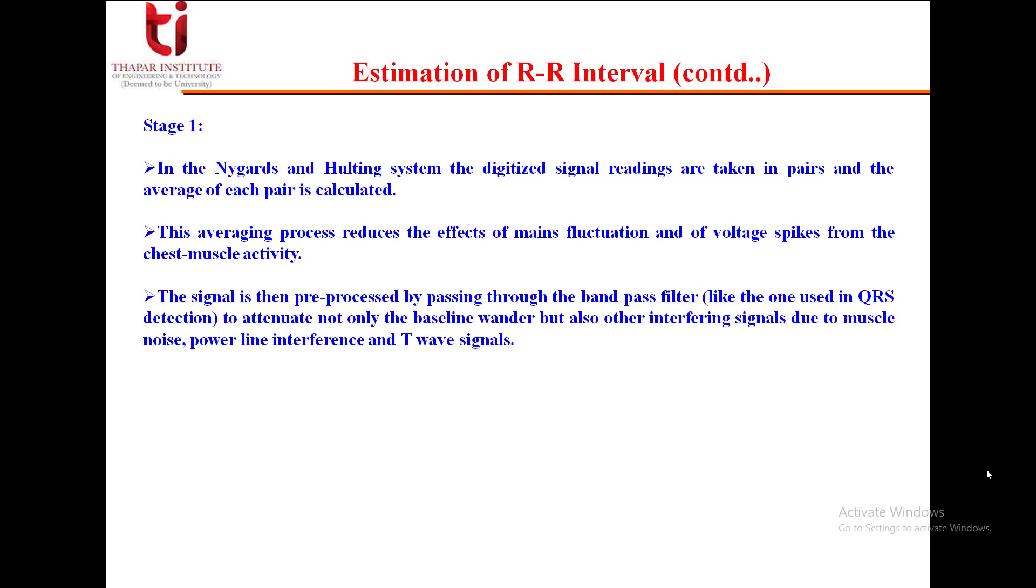The signal is then preprocessed by passing through the band pass filter, like we have used in the detection of QRS complexes, which was the cascade of low pass and high pass filter. This is to attenuate not only the baseline wander but also other interfering signals due to muscle noise, power line interference, and T wave signals.